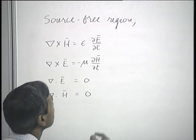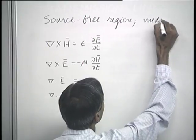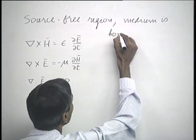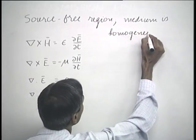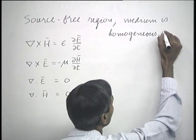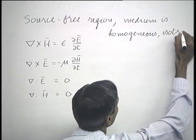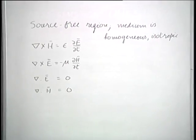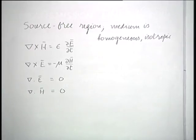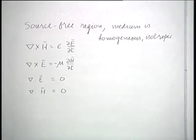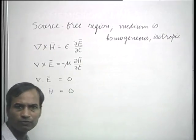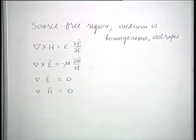We also considered that the medium is homogeneous as well as isotropic. For such a medium, the constitutive relations take a very simple form — epsilon, mu, and sigma become scalar constants. When these are incorporated in Maxwell's equations, we get this form under the source-free condition. These conditions are satisfied by free space or an infinite perfect dielectric media.